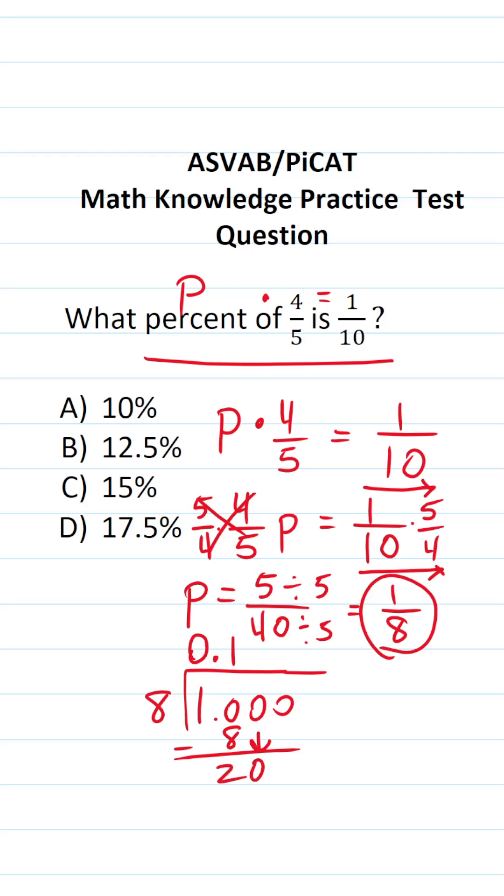How many times does eight go into twenty without going over? It's going to be two times. Eight times two is sixteen. Twenty minus sixteen is four. Drop down this zero. Eight times five is exactly forty with no remainder. So one-eighth as a decimal is point one two five.